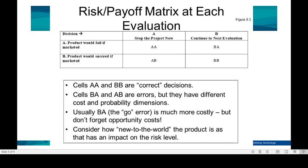The managerial problem arises in the other two cells, AB or BA. AB is a drop error — this is where a winner will be discarded. But BA is a go error — it means the loser will continue to the next evaluation point. So a question arises: which error does the manager most want to avoid?